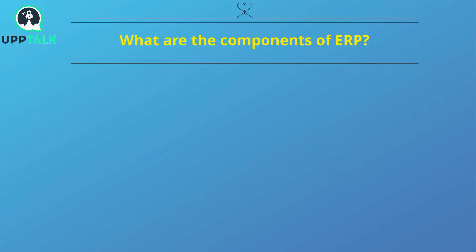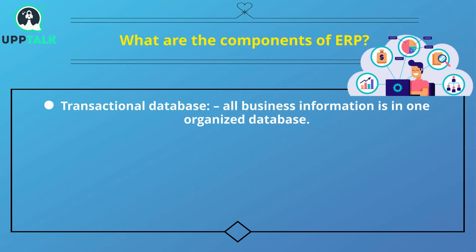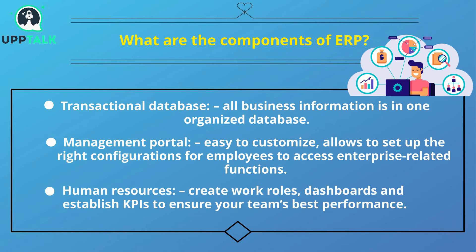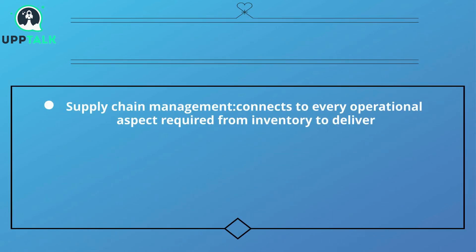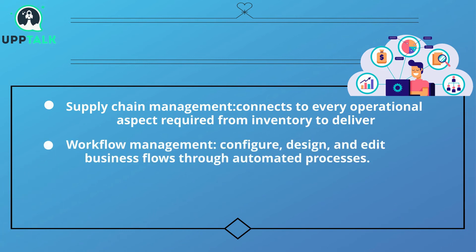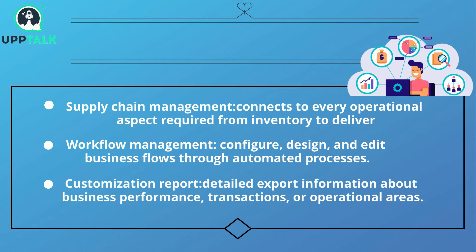What are the components of ERP? Transactional Database: all business information is in one organized database. Management portal: easy to customize, allows setting up the right configurations for employees to access enterprise-related functions. Human resources: create work roles, dashboards, and establish KPIs to ensure your team's best performance. Supply chain management: connects to every operational aspect required from inventory to delivery. Workflow management: configure, design, and edit business flows through automated processes. Customization reports: detailed export of information about business performance, transactions, or operational areas.